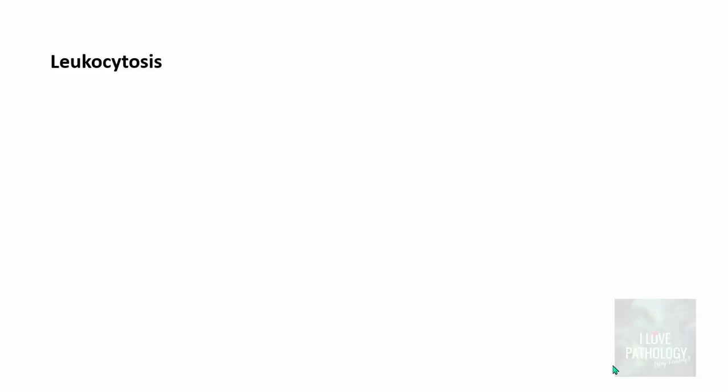We all know what leukocytosis is — anything more than 11,000 cells per cubic mm is called leukocytosis. It's an increase in leukocyte count, and all these increased leukocytes are mature leukocytes.